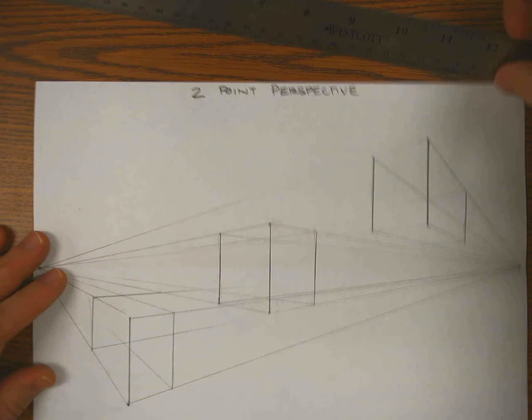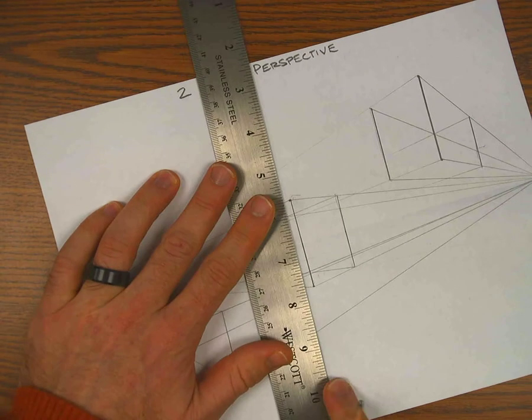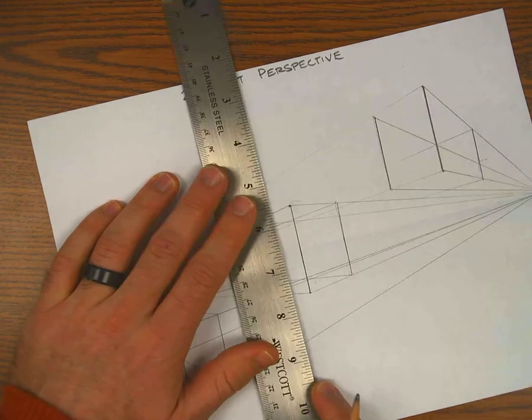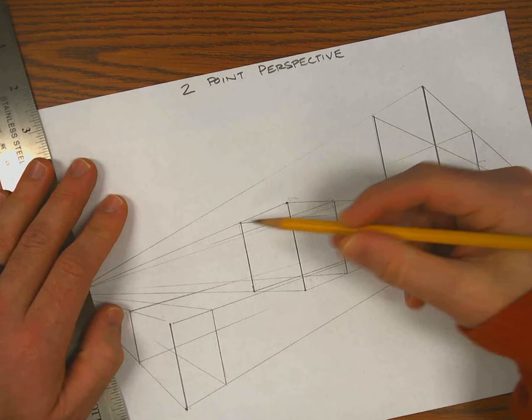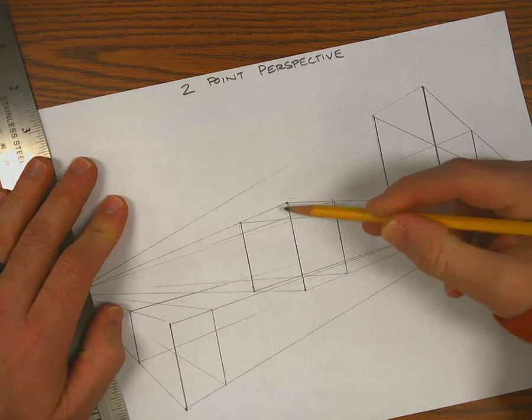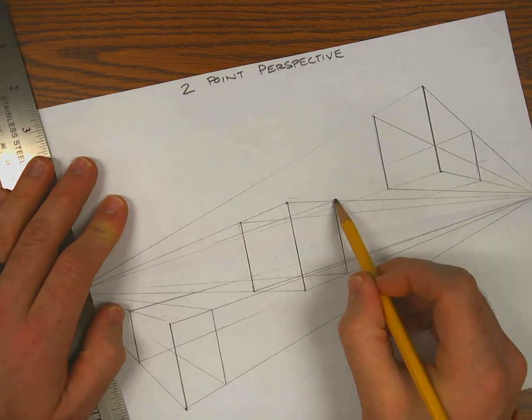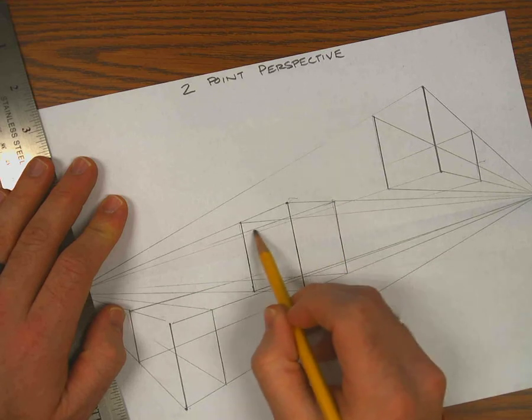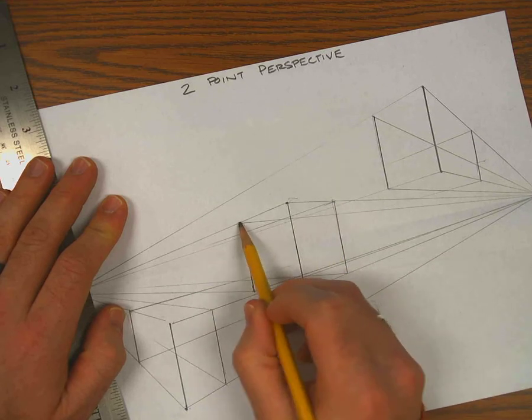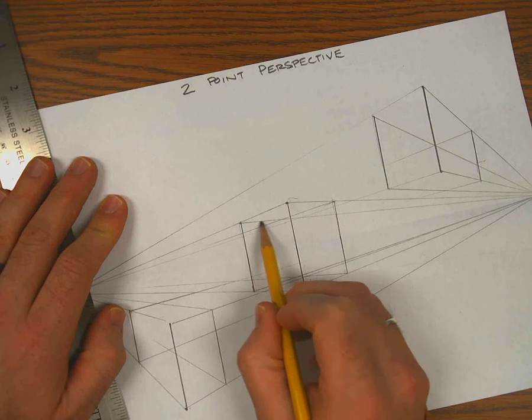And what I'll do now is I've got the front corner, the two side corners of this cube, and I need to do the back corner. So where the line from the top right corner intersects with the line from the left top corner.